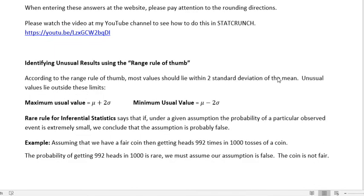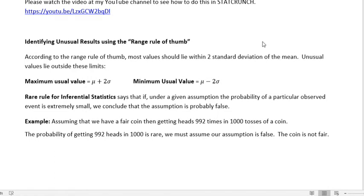Identifying unusual results using the range rule of thumb. According to the range rule of thumb, most values should lie within two standard deviations of the mean. Unusual values lie outside these limits. If you take the mean and add two standard deviations, you get the maximum usual value μ + 2σ. If you subtract two standard deviations, you get the minimum usual value μ - 2σ—not the maximum possible, but the usual values we would most likely see.